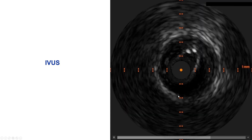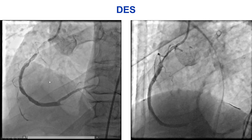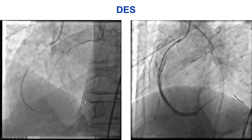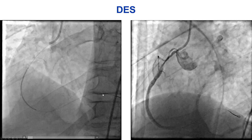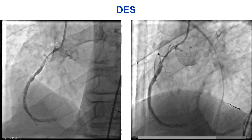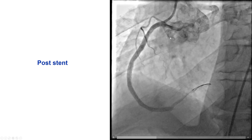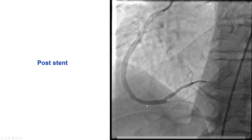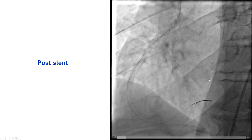This is now a 4.0 millimeter vessel. Wiring goes very easily into the posterolateral using a workhorse guidewire, and then we place two drug-eluting stents from the distal RCA all the way to the ostium of the right coronary artery, and this provided a nice result. We do have TIMI flow into the posterolateral.